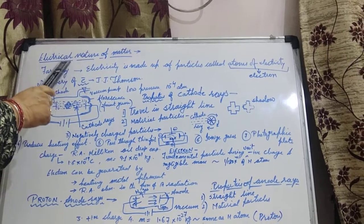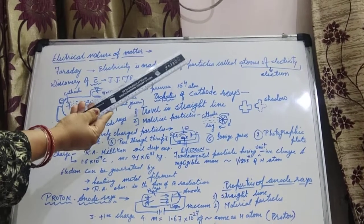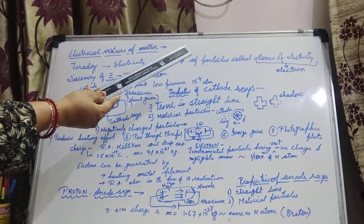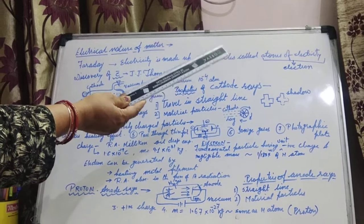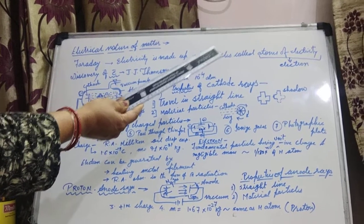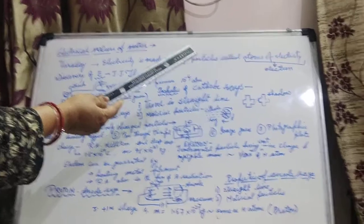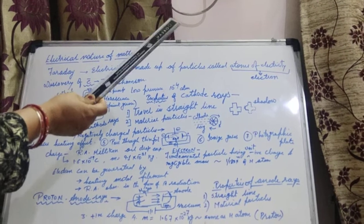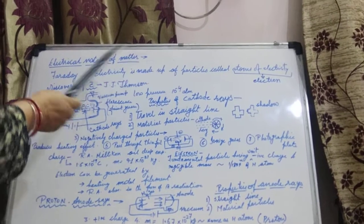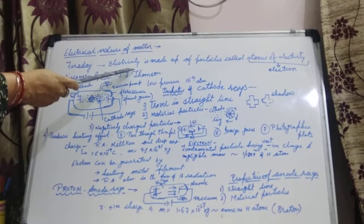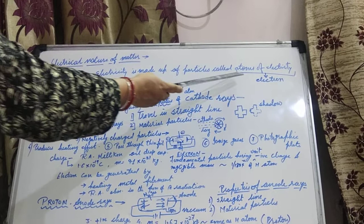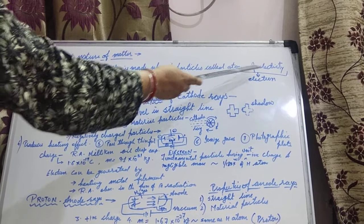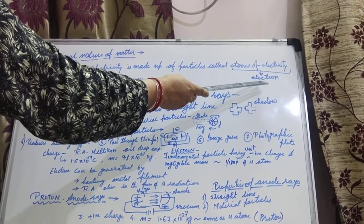How can we say that matter shows electrical nature? Suppose the scale I am taking — if I rub this scale over our hairs, it acquires charge over it. One of the charge is getting rubbed off and that's why it becomes charged. So it is developing electrical nature over it. According to Faraday, electricity is made up of particles called atoms of electricity, and later these atoms of electricity were termed as electrons.